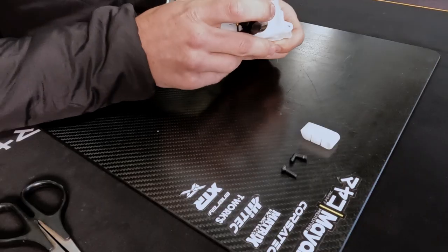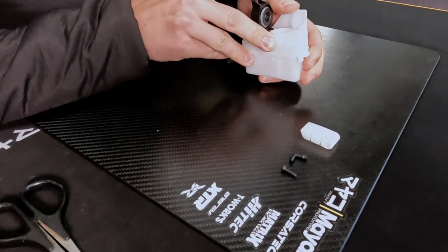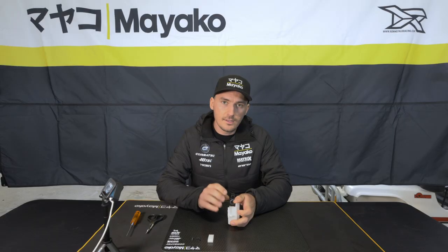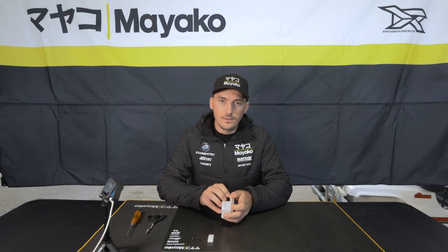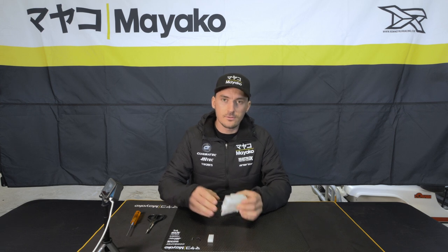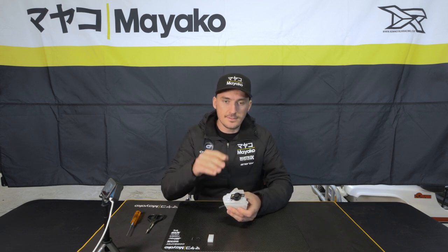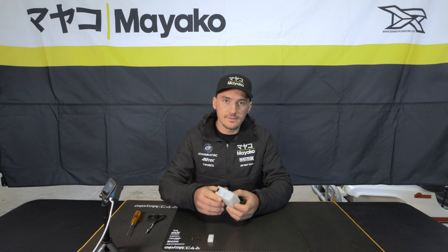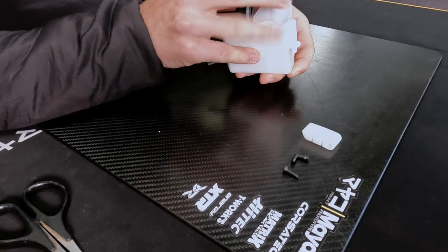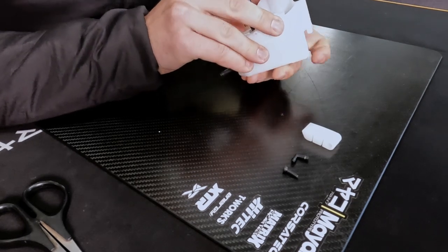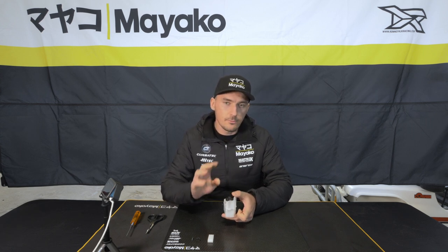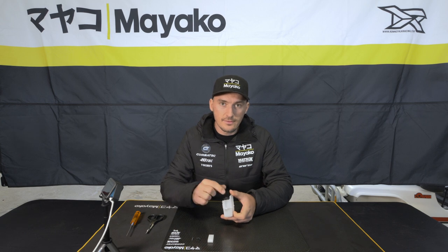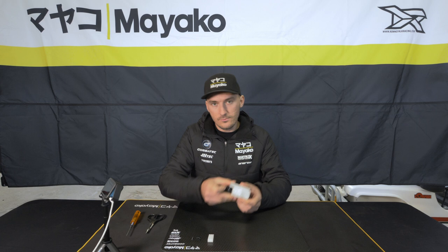First of all, if you open the lid here of the tank, it's important to kind of see where the clunk is inside. You don't want it to be too far inside because if the car is upside down or in the jumps, the clunk can get stuck on the back wall here of the tank. What I do is look down there, and I want it to be like a three to four millimeter space between the end of the clunk to the back wall.